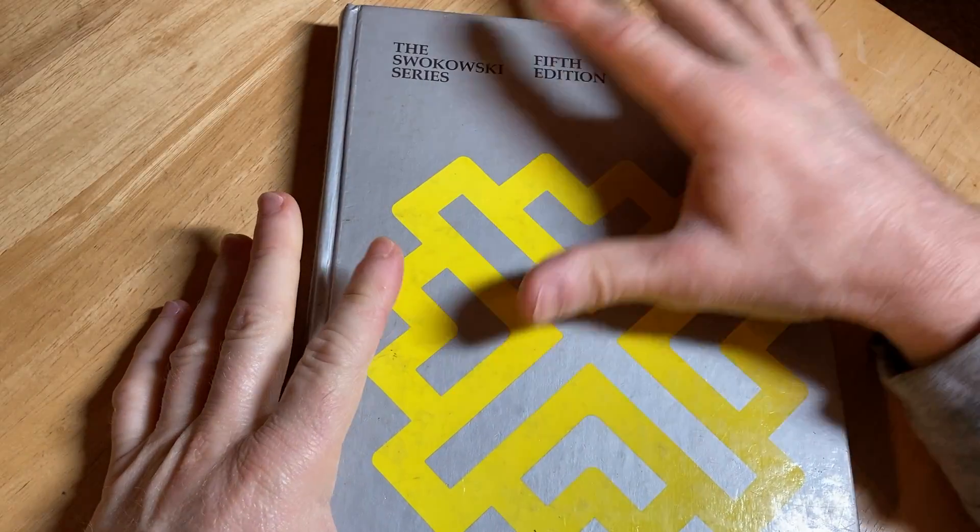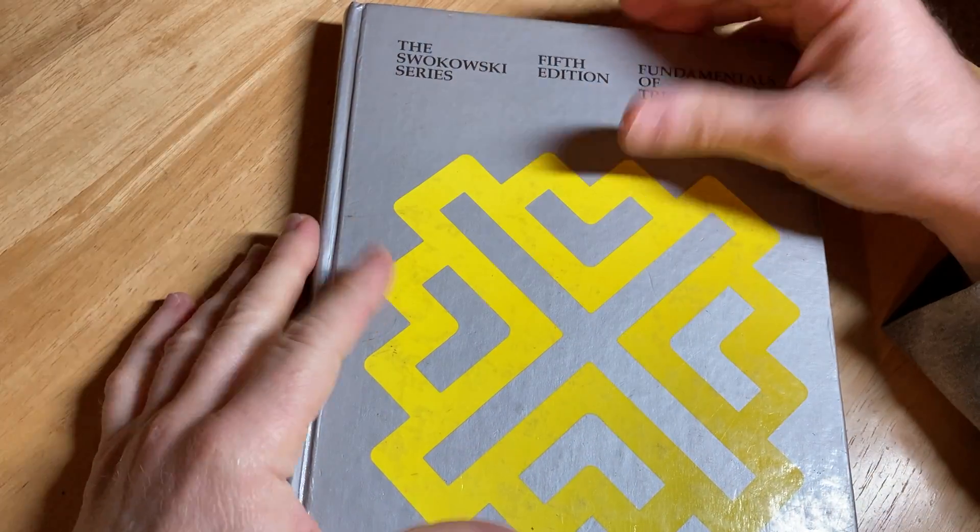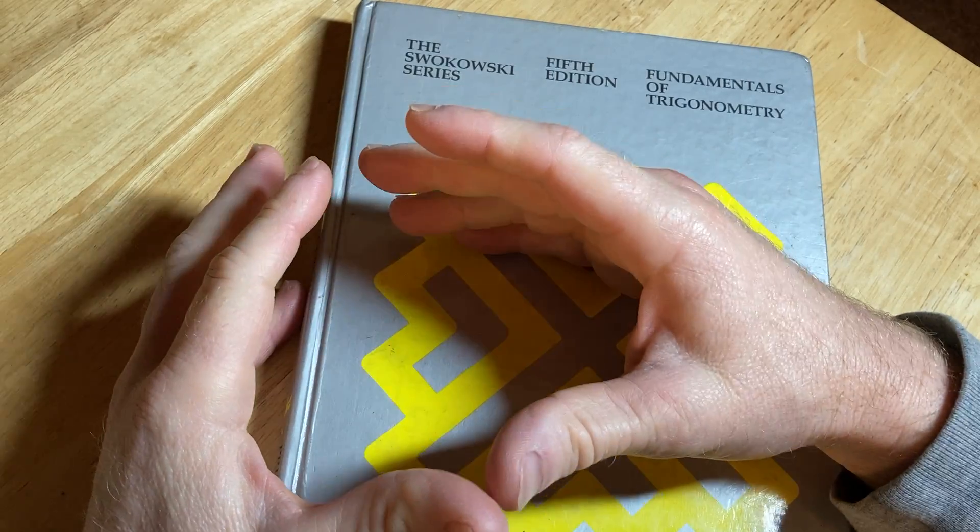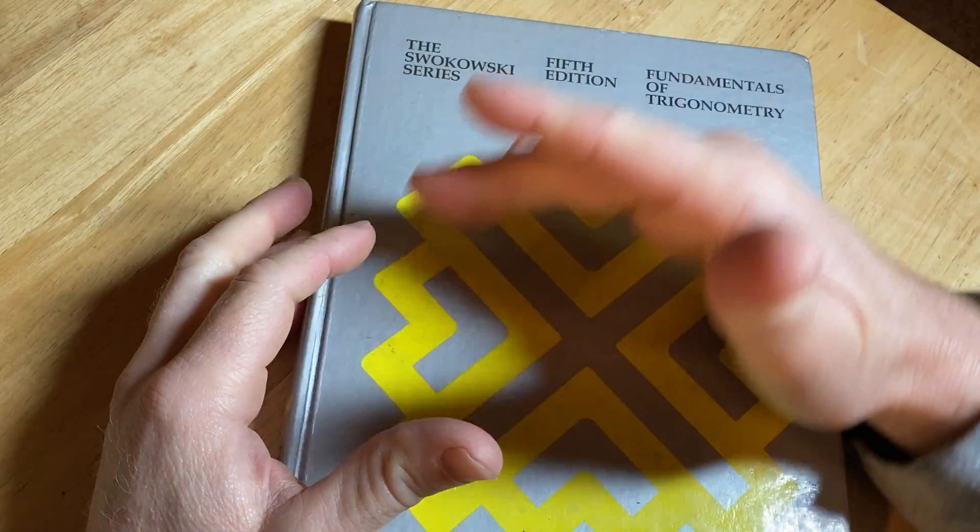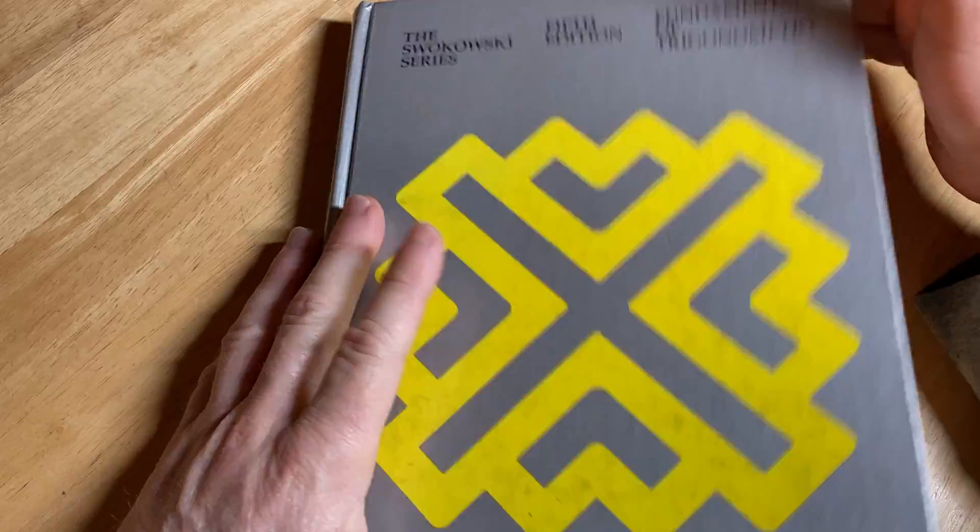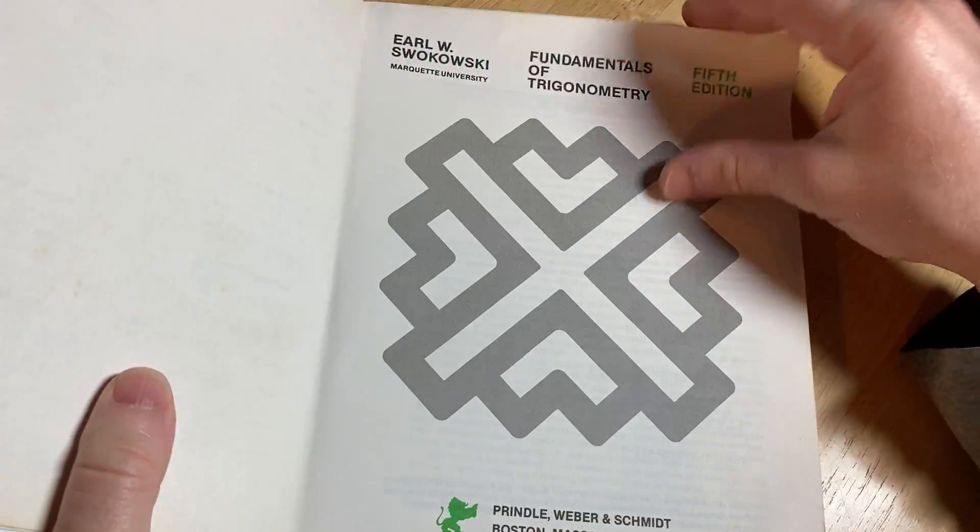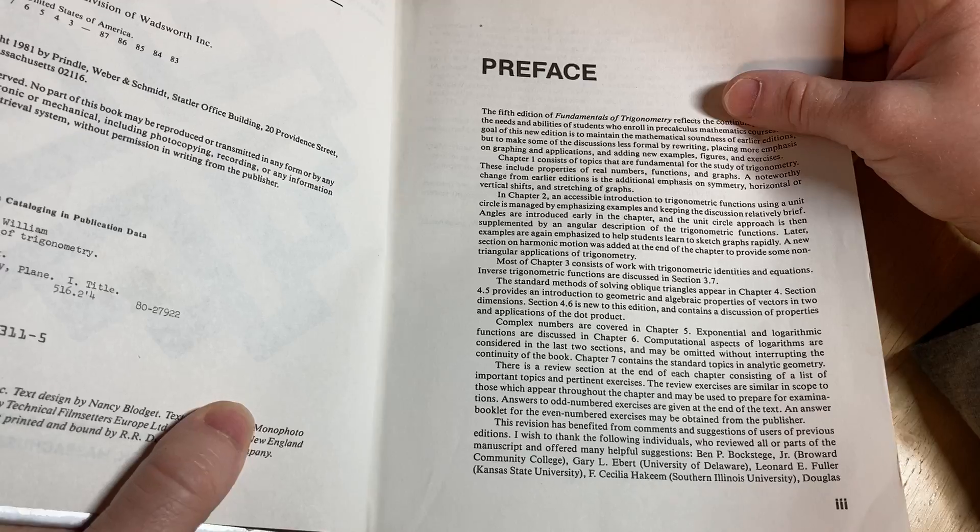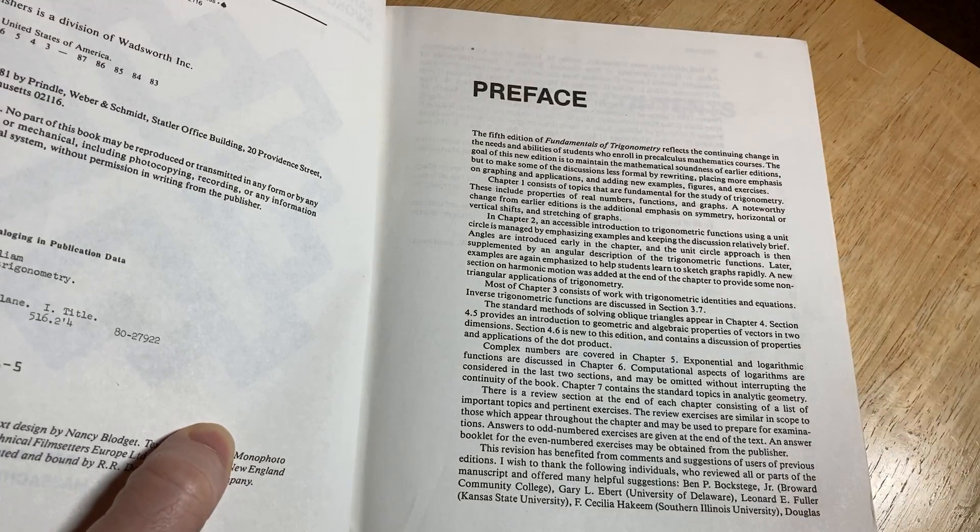Trig books, you don't see them too often anymore because most colleges seem to be opting for books that are used to teach both pre-calc and trig. So students can buy one book and they can use the same book for both courses. Whereas this one, this is just a trig book. So you couldn't really use this for two courses. That's been like a trend lately in colleges.